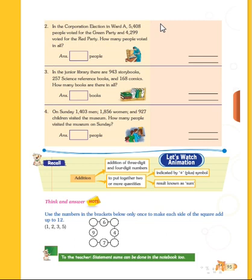First we write: votes for the Green Party, that is 5,408. Then votes for the Red Party, that is 4,299. Then we have to add both. Whatever the answer is, you have to write here in this box. Likewise, in the third and fourth problems also, you have to add.